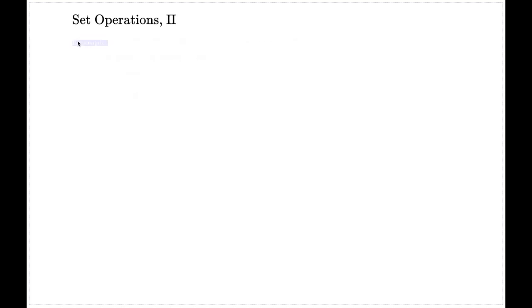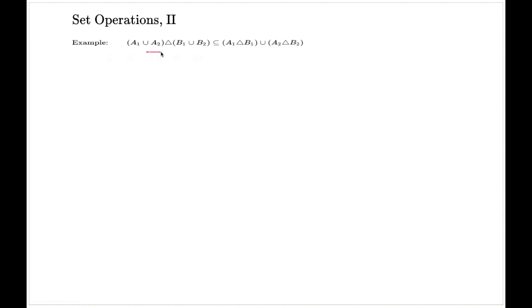In this video I'll show you how we normally prove set identities, set embeddings, or inclusions. The example says: show the following embedding of sets — that this set is smaller, so every element of one set is an element of the other. Normally you have to do a very detailed, step-by-step analysis of what's happening on the left-hand side, and show that in every possibility the element of the left-hand side will also be an element of the right-hand side.